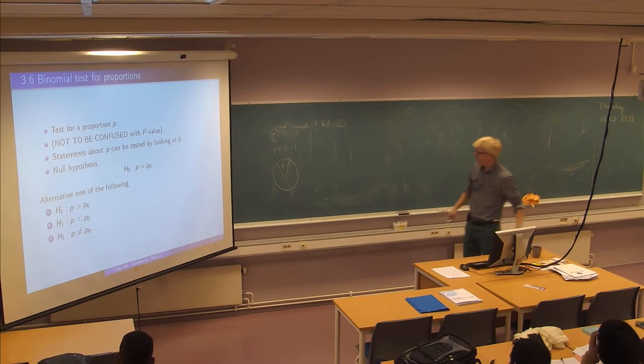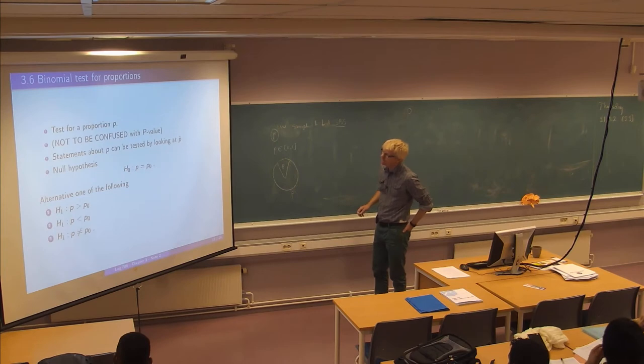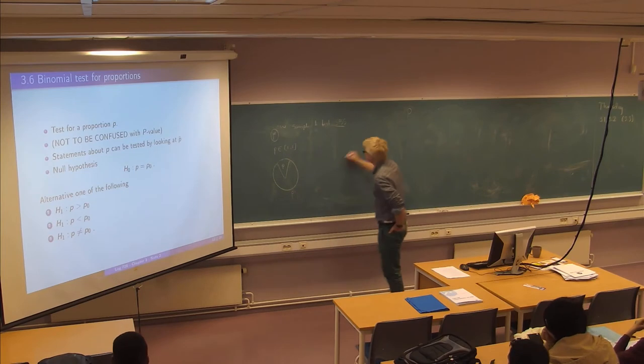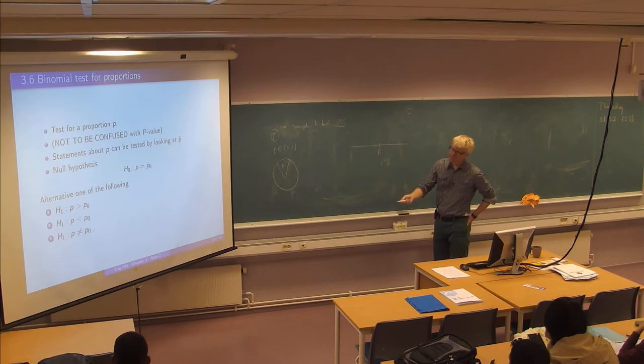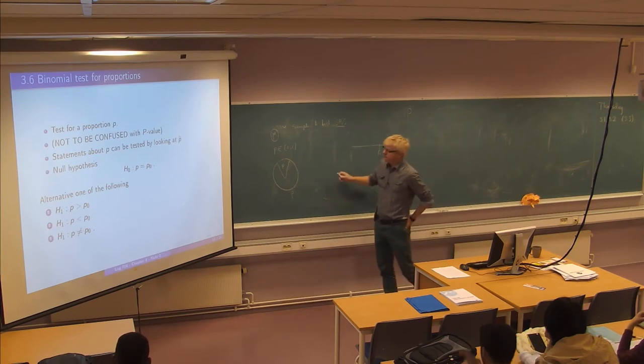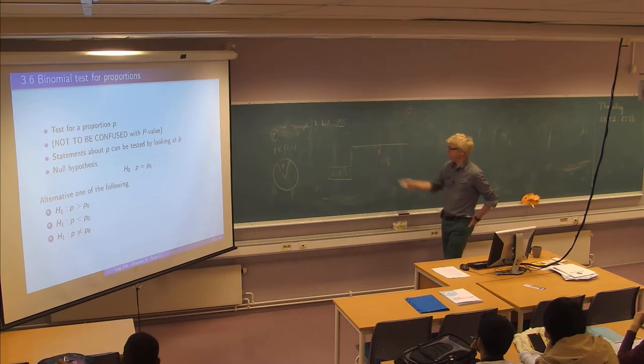And of course there can be statements and there will often be statements about such proportions. And the alternative hypothesis, there will be, so here is a P0. And the alternative will say, okay, P is greater than P0, it's smaller than P0 or it's a two-sided thing that's saying that it's just different from P0. And the null hypothesis typically says a particular value for P.